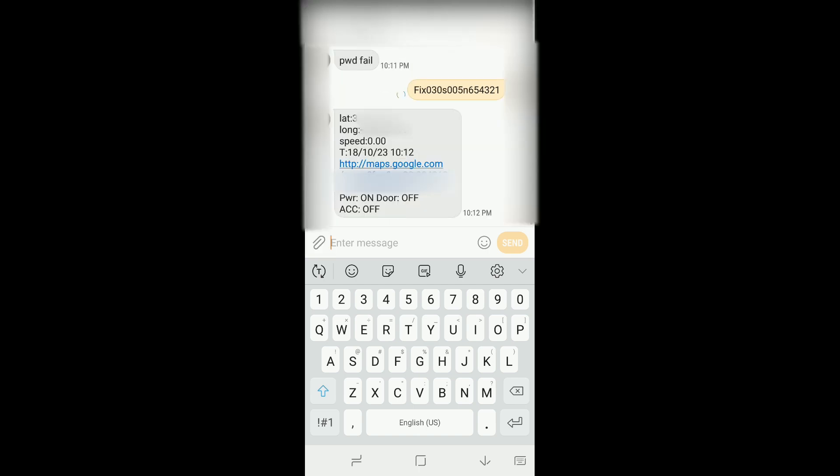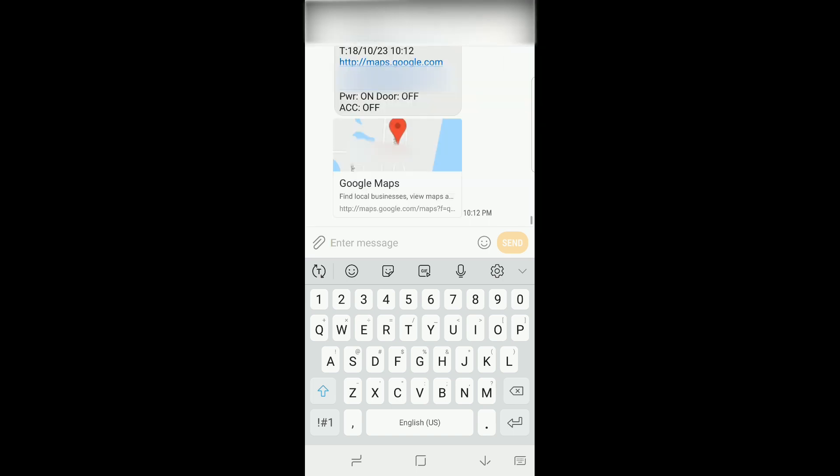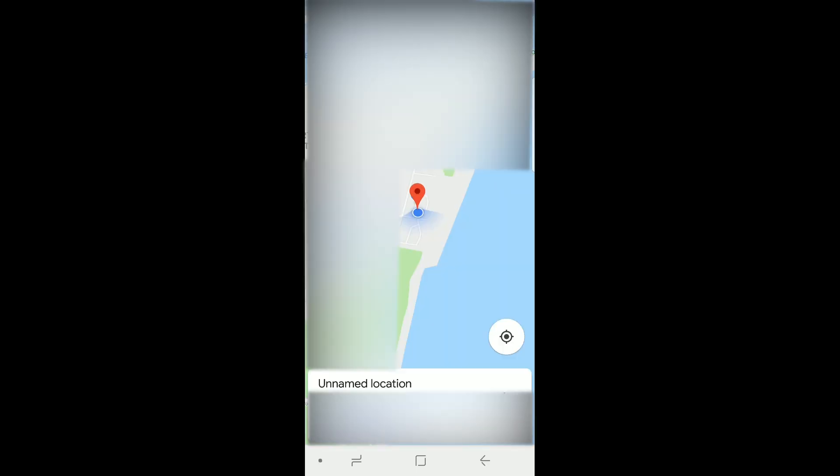here you can see it sends me the lat, the long, the speed, the time, a link to a map in Google. It tells me the power is on, the door is off, and the accessory is off. Now the device has sent me a second text with another link to Google Maps. So once I click on that, it's going to show me in Google Maps where the location of the device is.